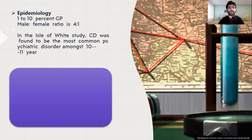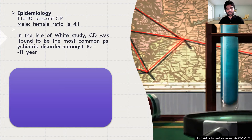Conduct Disorder is present in 1 to 10% of the general population. The male to female ratio is 4 to 1, so it is four times more common in males. The Isle of Wight study showed that Conduct Disorder was the most common disorder in children of the age group from 10 to 11 years.